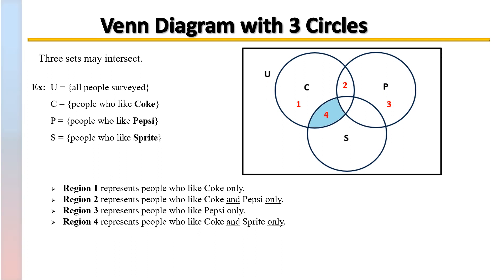Region 4 represents the population of people within that survey who like Coke and Sprite, and they don't like Pepsi. They only like Coke and Sprite.